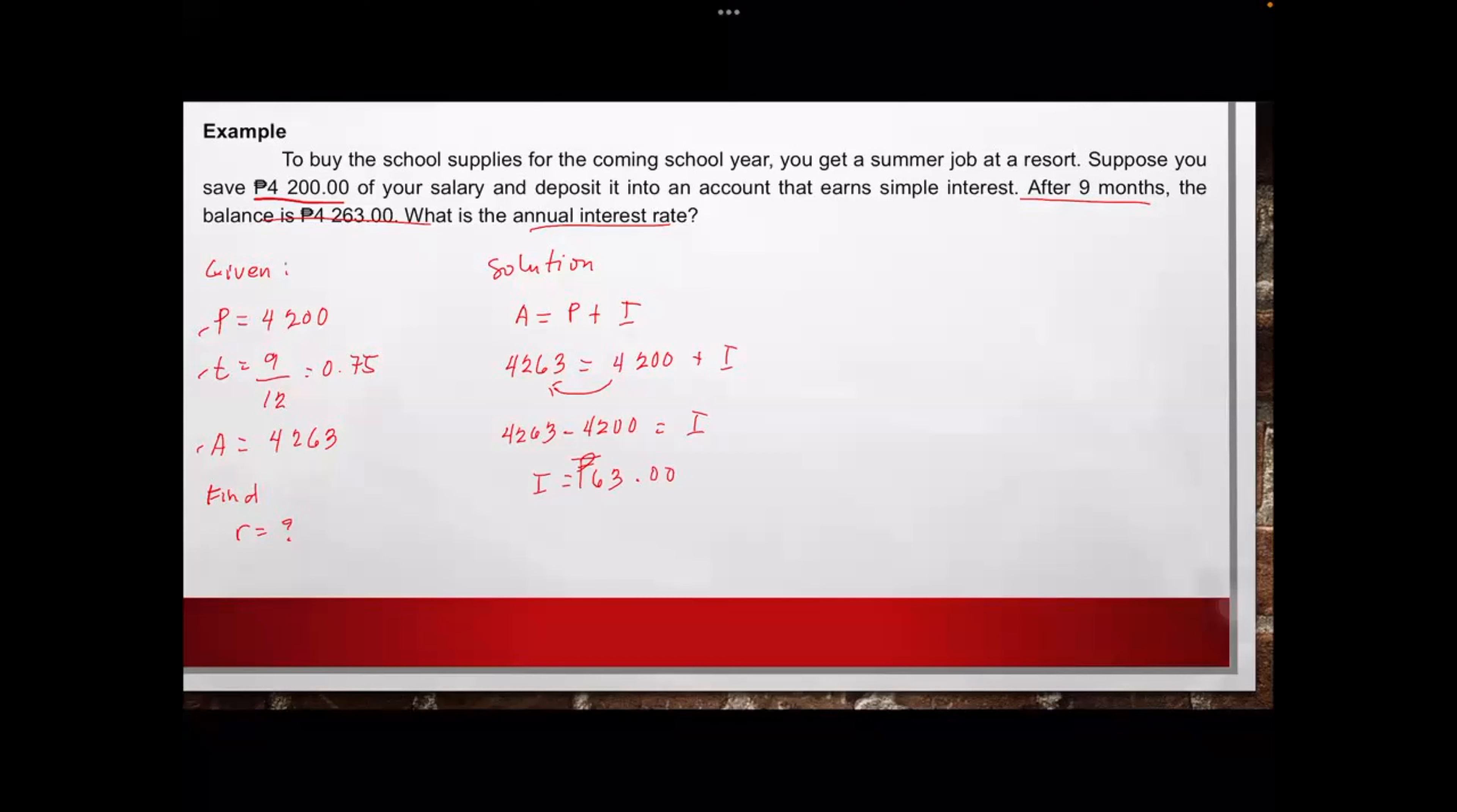Now from this, we can identify your R using I equals PRT. So I, we said your I is 63 from here, equals P, what is P? That is 4,200. Now multiply by R, multiply by T which is 0.75. So multiply these two. This will be 63 equals 4,200 multiply by 0.75. What will be the answer? 3,150. Okay, so we have 3,150. Then R. We are getting R, so we need to divide by 3,150 on both sides. Cancel out. Therefore, R equals 63 over 3,150.